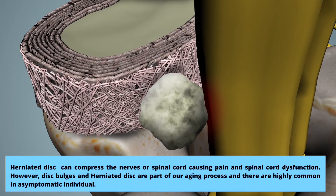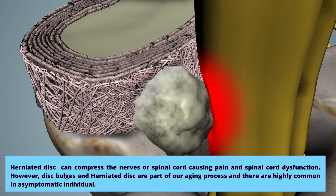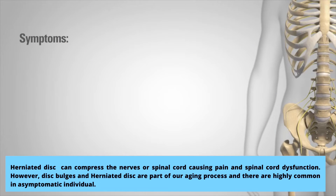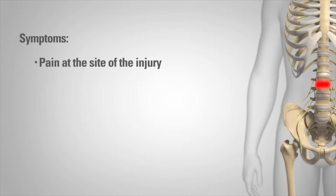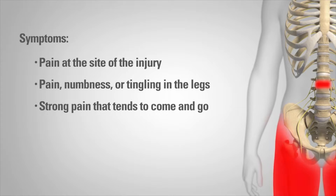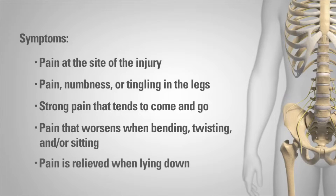Disc bulges and herniated discs are part of our aging process and are highly common even in asymptomatic individuals. Symptoms include pain at the site of injury, numbness or tingling in the legs, strong pain that tends to come and go, pain that worsens when bending, twisting, or sitting, and pain that relieves when lying down.